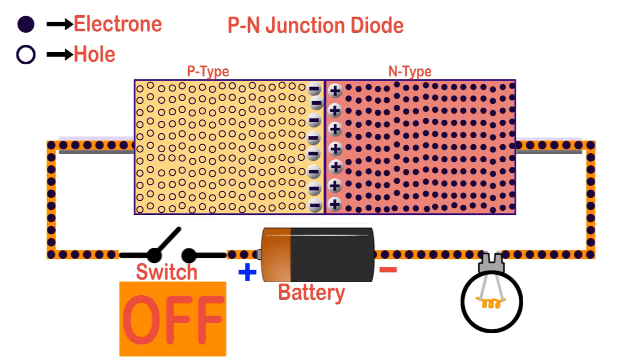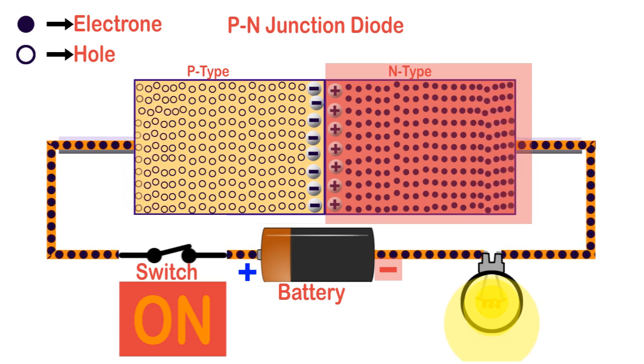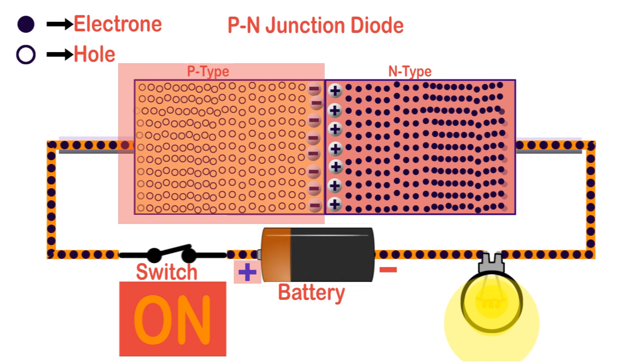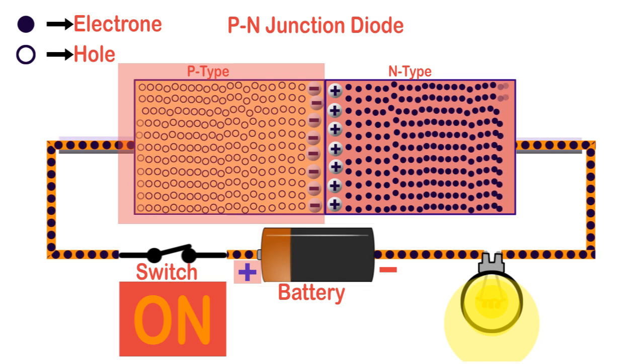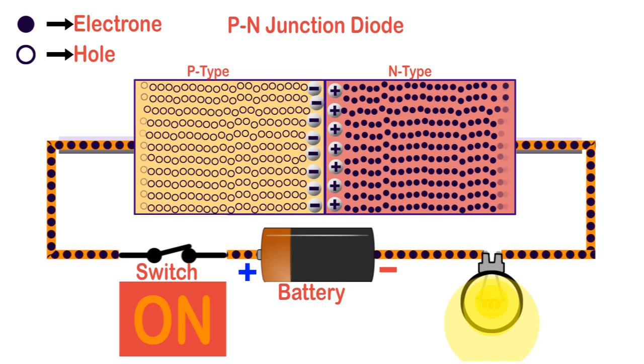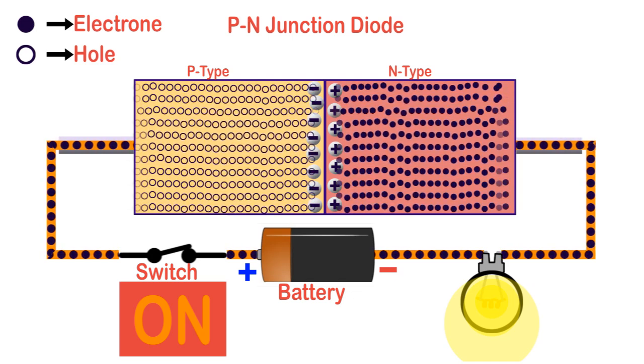In the condition of forward bias, the negative terminal of the external source connected to the N region pushes free electrons towards the P side. Similarly, the positive terminal pushes holes from the P side to the N side. As the external supply voltage increases, more electrons and holes start traveling towards the junction.